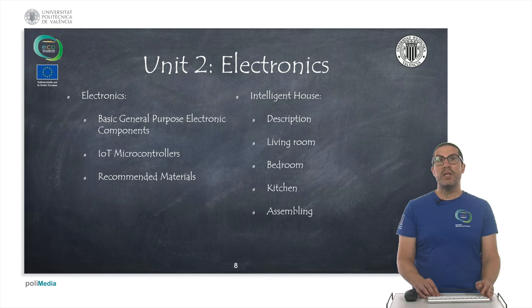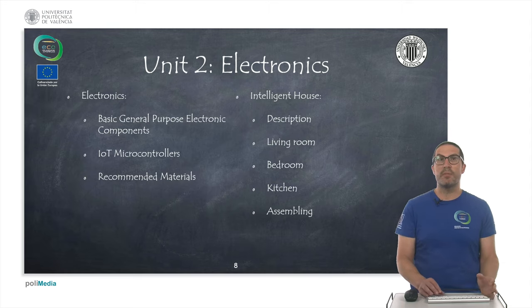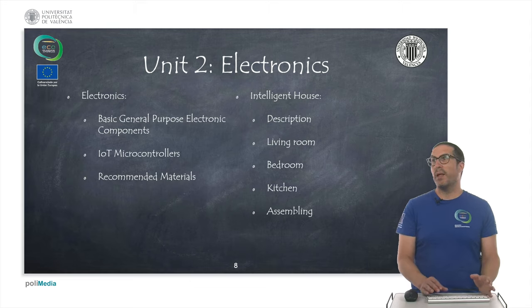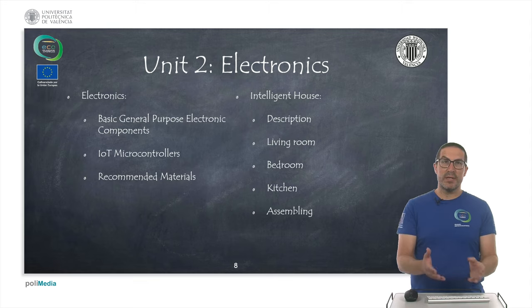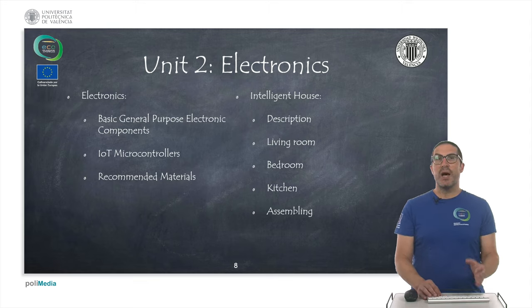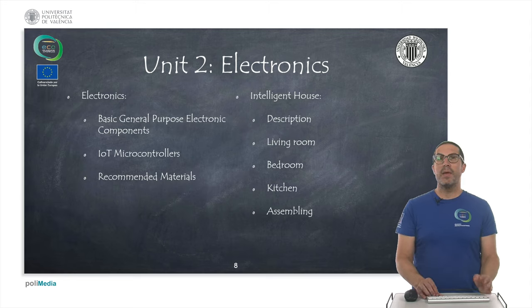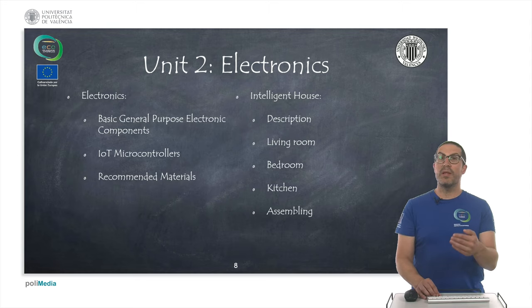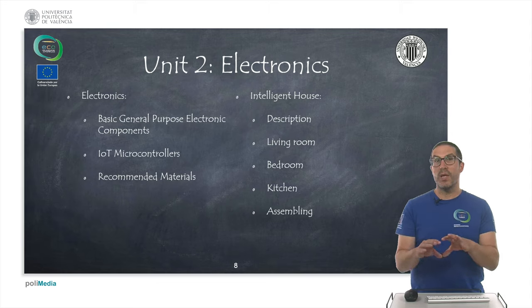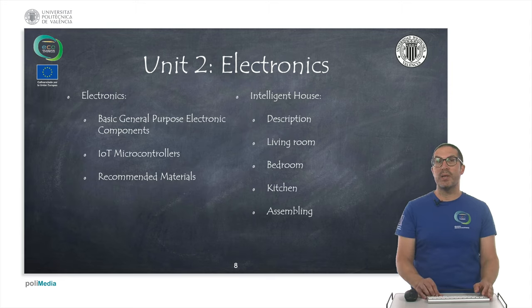In the second unit, we're going to focus on electronics. We'll provide a basic general description of the electronic components we're going to use, explain microcontrollers particularly used in IoT applications, and recommend hardware materials for implementing the intelligent house. We'll also describe the materials needed for the intelligent house, which is made of three sections: a living room, a bedroom, and a kitchen — and explain how to assemble everything.